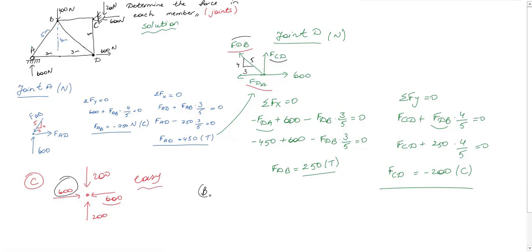The last one is joint B. We don't need any calculation here because we already found everything. I know FBA as it is 750 Newton compression. I know 400, it was given. And I know FCB reaction which is 600 Newton compression. And I know also FBD which is 250 Newton tension. So as you see, without any calculation, I found all forces in joint B.